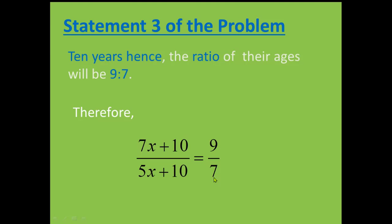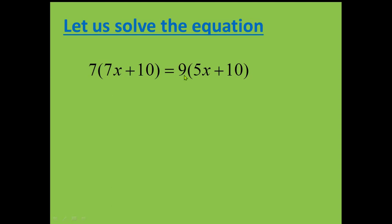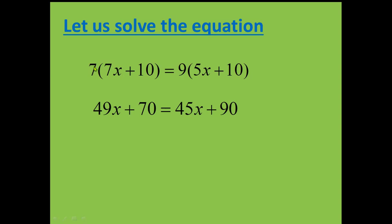And we just need to solve this equation to find out the factor X. So let us try to solve this equation. First, we need to cross multiply. So after cross multiply, we get 7 times 7X plus 10 equals 9 times 5X plus 10. So I take 7 inside and I get 49X and I get 70. Here I take 9 inside and I get 45X and I get 90.